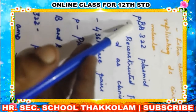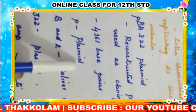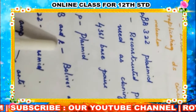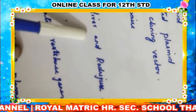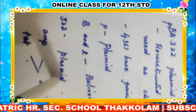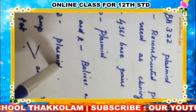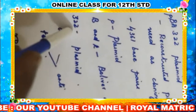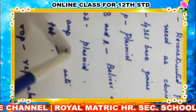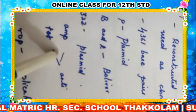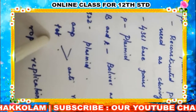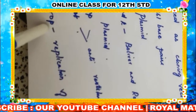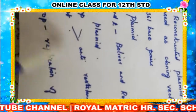Regarding the abbreviation: the small 'p' denotes plasmid; 'B' and 'R' are the initials of the scientists Bolivar and Rodriguez who developed this plasmid; and 322 is the number of the plasmid developed from their laboratory. AMP stands for ampicillin resistance and T for tetracycline resistance — these are antibiotic resistant genes. ROP stands for replication of plasmid.